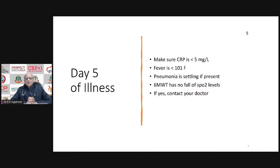If that hasn't happened, either you had baseline systemic inflammation, or your current inflammation is still ongoing. So I have set a criteria: make sure by day five your CRP is less than 5 milligram per liter. You can do a qualitative test — if the qualitative CRP strip test is negative by day five, or quantitative CRP is less than five, you know you are in safe hands.